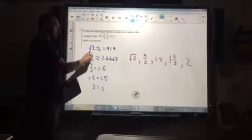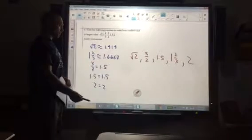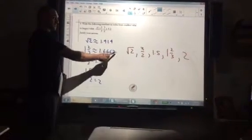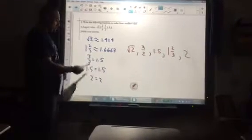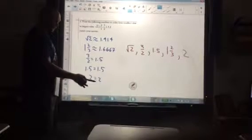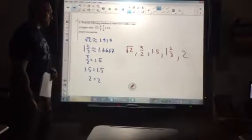So radical 2 is approximately 1.414, 1 and 2 thirds is 1.666 repeating and rounds with a 7, 3 halves is 1.5, and 2. Right, we can see those just fine.